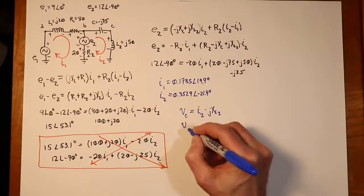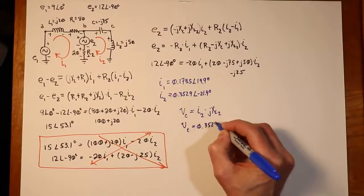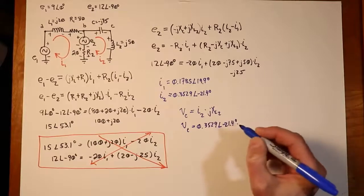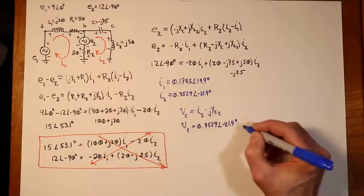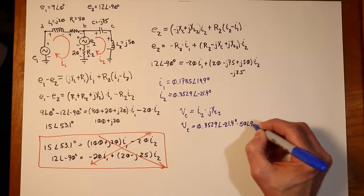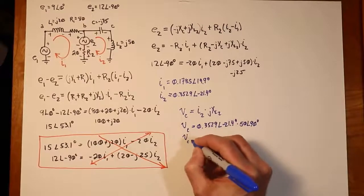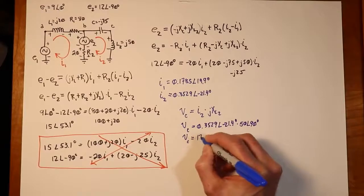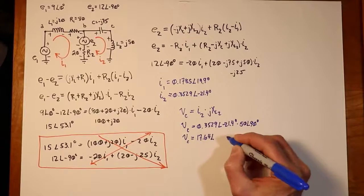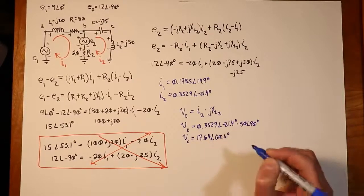So if we plug the numbers in there, our I2, 0.3529 minus 21.4 times J50, or 50 at an angle of 90 if you prefer. And we'll come up with an appropriate value. And Vc just happens to work out to 17.64 volts at an angle of 68.6 degrees.